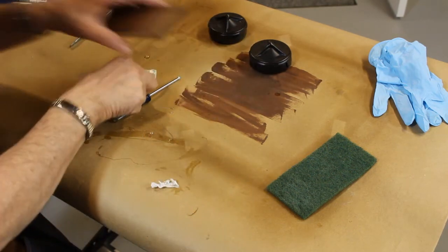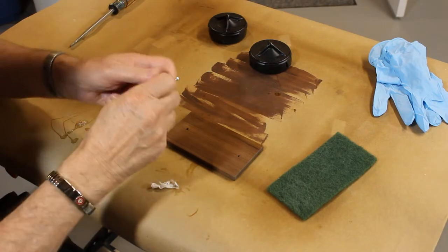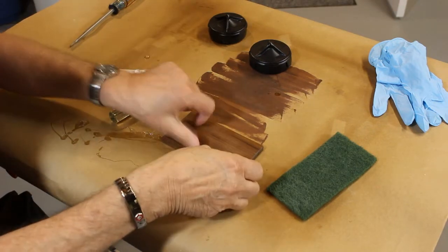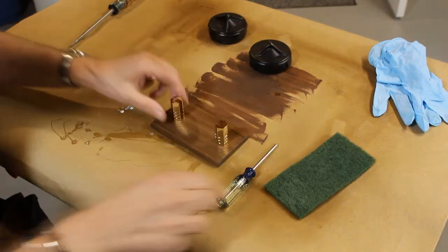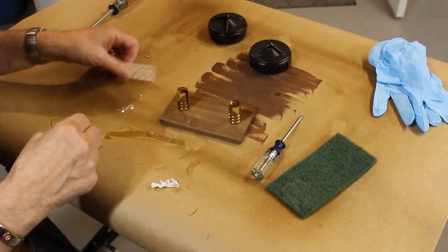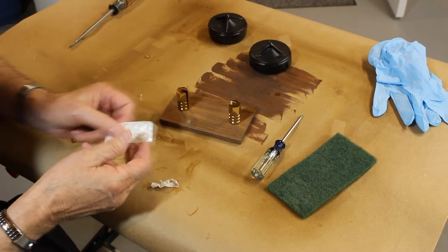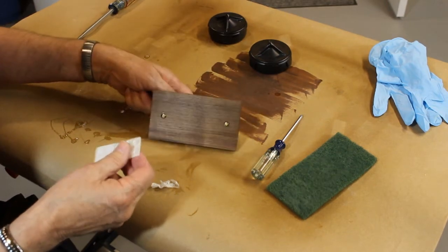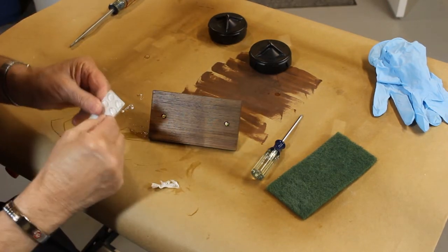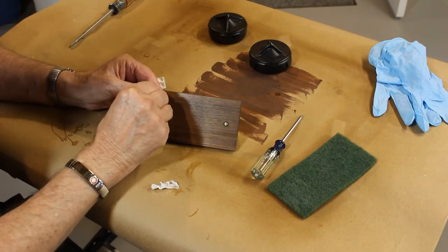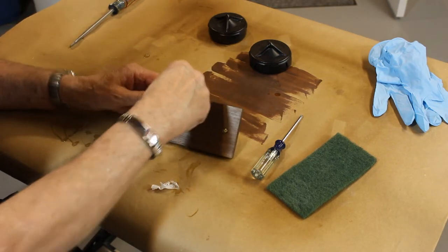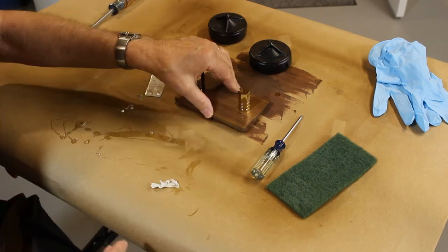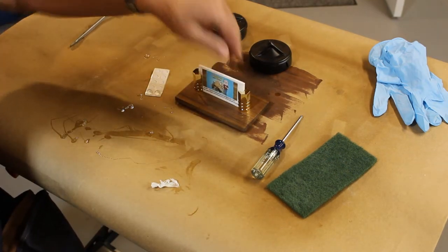So now all I have to do is put my business card holders back on. And there we go. Now the only other thing I'm going to do is I have some little clear bumpers. And I'm going to put one on each corner in the bottom so that it won't slide around on the desk. And there we go. Put some cards in it.